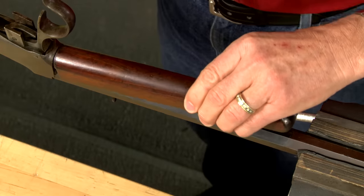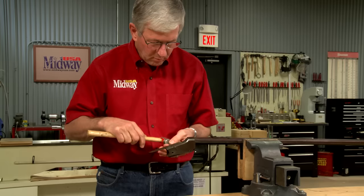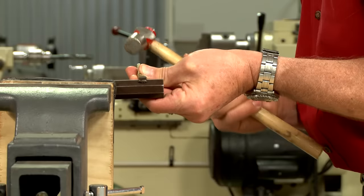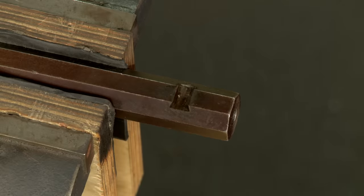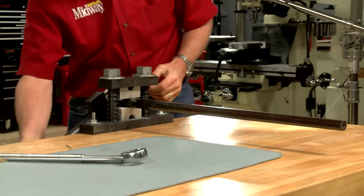The first thing to do is to completely disassemble and inspect the rifle. I'll remove the sights being sure to drift them out from left to right. Then using a barrel vise and action wrench I'll remove the barrel.